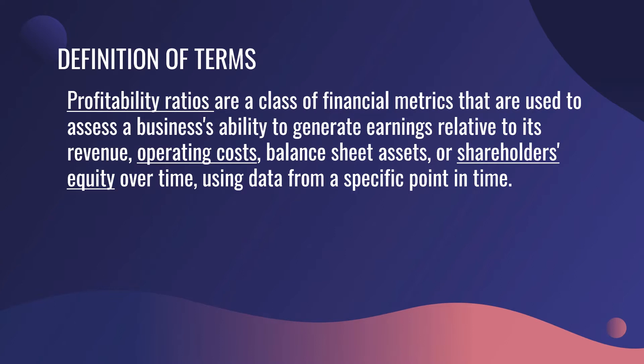Let's define terms. Profitability ratios can be compared with efficiency ratios, which consider how well a company uses its assets internally to generate income as opposed to after-cost profits. Profitability ratios are a class of financial metrics used to assess a business's ability to generate earnings relative to its revenue, operating costs, balance sheet assets, or shareholders' equity over time.